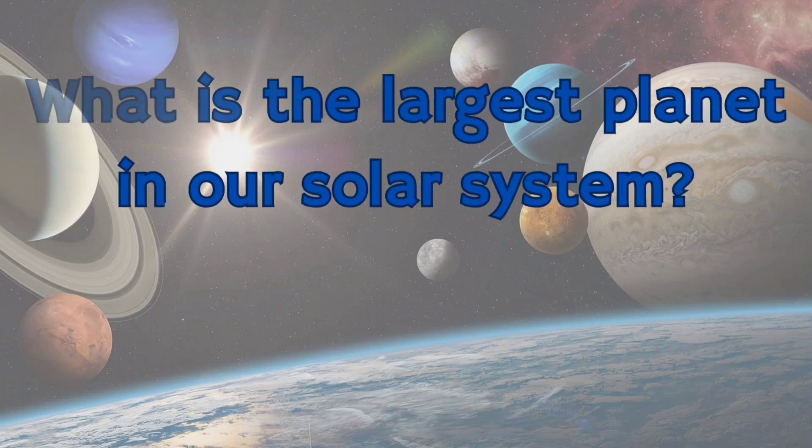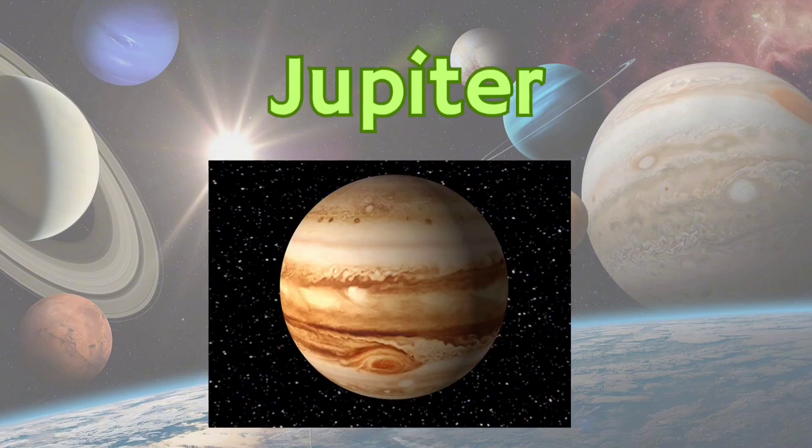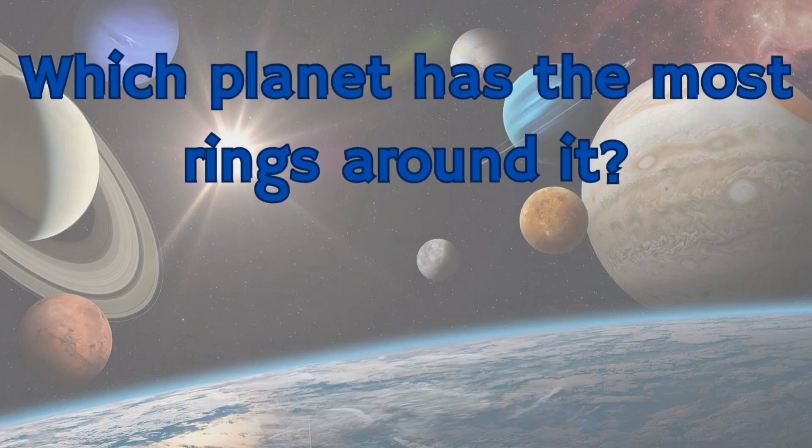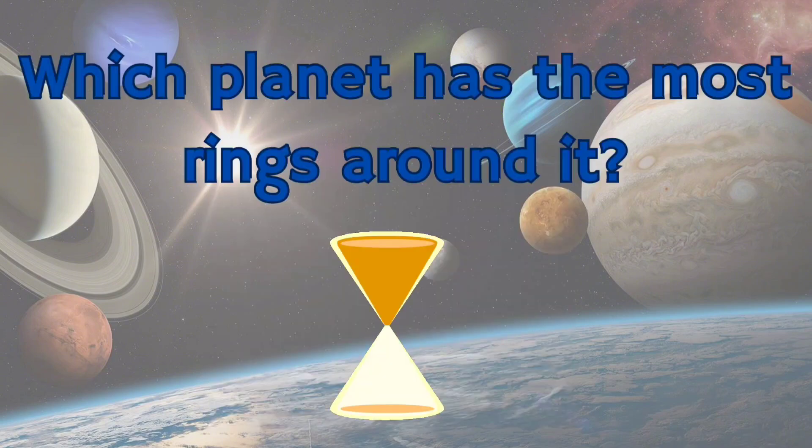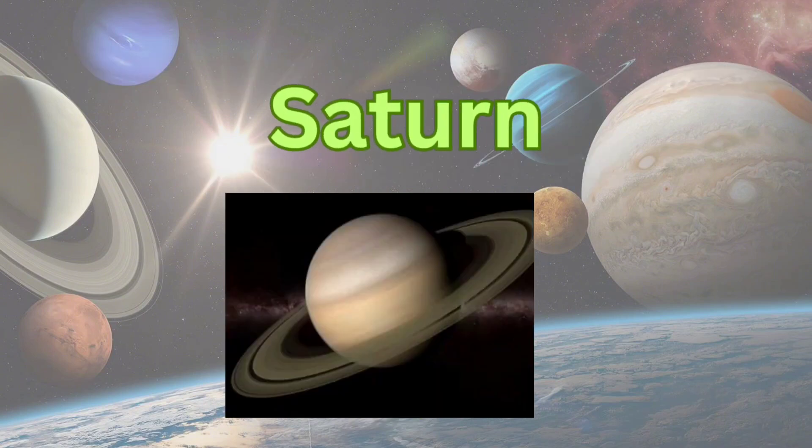What is the largest planet in our solar system? Jupiter. Which planet has the most rings around it? Saturn.